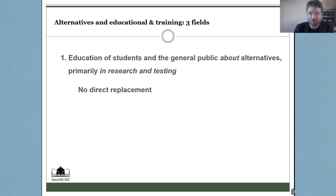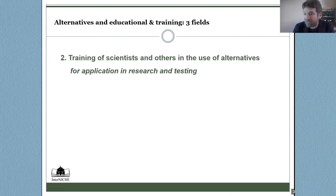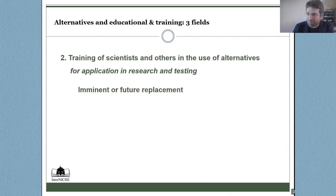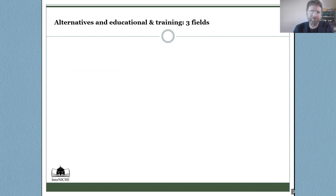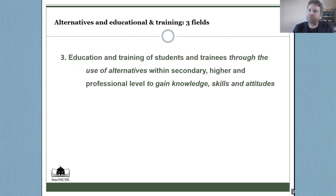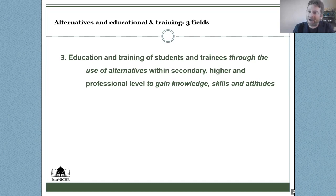The second area is the training of scientists, technicians, assessors, and others in the use of alternatives for application within research and testing — this may bring about replacement in the immediate or medium future. The third area, which is what we're focusing on today, is the education and training of students and trainees through the use of alternatives within secondary, higher, and professional levels in order to gain knowledge, skills, and attitudes. We're talking about what tools students and trainees use to gain knowledge and skills, and this is an area where replacement can be achieved.